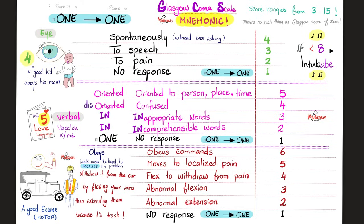For motor response, think like the mechanic. The motor was fine and obeyed commands — 6 points. The mechanic tried to localize the problem — moves to localize pain is 5. The mechanic decided to withdraw the motor from the car — flexion or withdrawal from pain is 4. The mechanic flexed his arms — abnormal flexion is 3. Then extended his arms and threw the engine out — abnormal extension is 2. No response gives you 1.